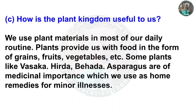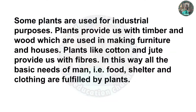Question C. How is the plant kingdom useful to us? We use plant materials in most of our daily routine. Plants provide us with food in the form of grains, fruits, vegetables, etc. Some plants like vasaka, hirada, beheda, and asparagus are of medicinal importance and are used as home remedies for minor illness. Some plants are used for industrial purposes. Plants provide us with timber and wood used in making furniture and houses. Plants like cotton and jute provide us with fiber. In this way all the basic needs of man — food, shelter, and clothing — are fulfilled by plants.